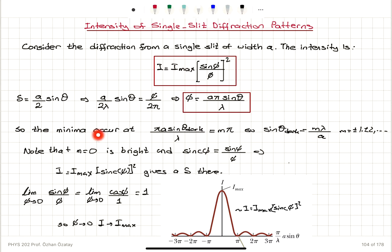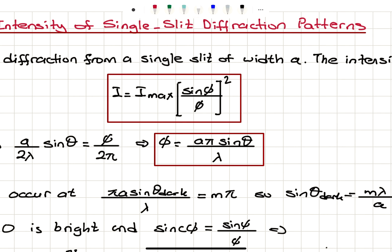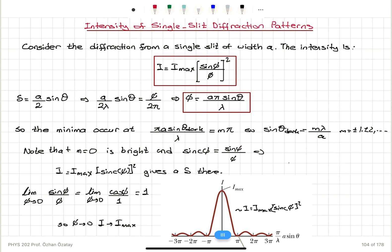The minima will occur when πA sinθ_dark / λ = mπ, which corresponds to a minimum — the dark band. We have sin(mπ) = 0, so sin π = 0, sin 2π = 0, etc. Therefore sinθ_dark = mλ / A, since the π's cancel.